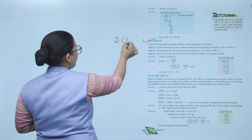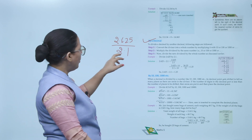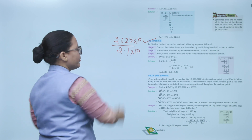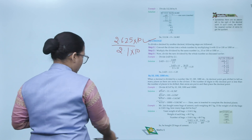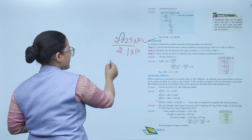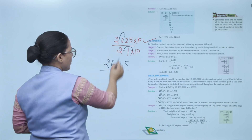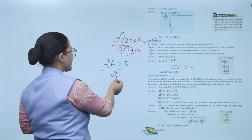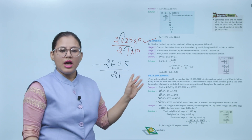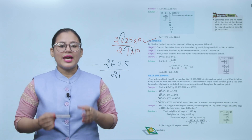Example: divide 2.625 by 2.1. First, convert the divisor 2.1 into a whole number by multiplying by 10. Then multiply the dividend 2.625 by 10 as well — the decimal shifts one place right, giving 26.25. The divisor 2.1 becomes 21. Now divide 26.25 by 21 as you would with whole numbers.